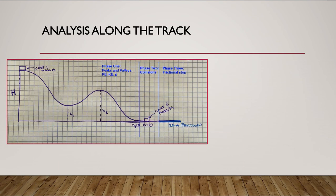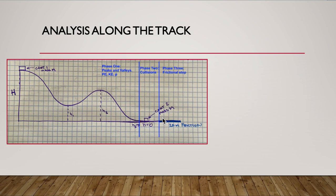Looking at this diagram, phase one is where you launch and calculate kinetic energy and potential energy at all points, and momentum at all peaks and valleys. When you reach the end valley you'll have solved for a velocity, and that becomes your initial velocity for the collision in phase two. After the collision the two carts continue as one into the frictional section, and again the end velocity carries into the next phase.